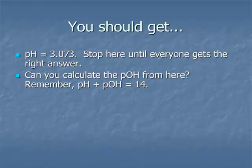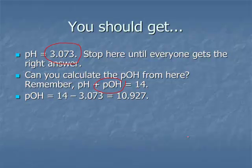Can you calculate the pOH from here? Remember, pH + pOH = 14. pOH = 14 - 3.073 = 10.927.